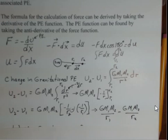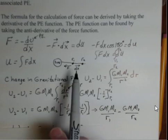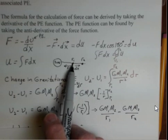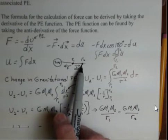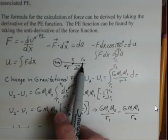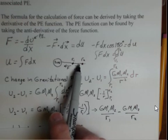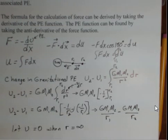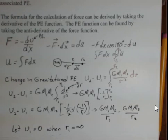We're increasing the potential energy as we move from R1 to R2. This makes sense — it requires work to move something farther away from the Sun, and the object has more potential energy as it's farther away. It could fall back in and increase the kinetic energy of the object.